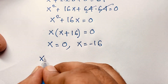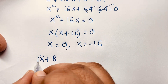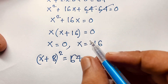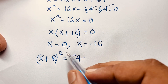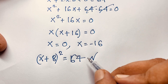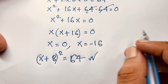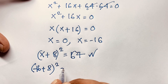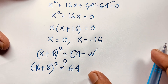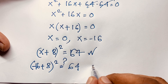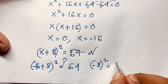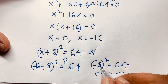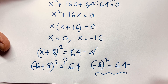Let's verify our answers in the original equation (x + 8)² = 64. First, if x = 0: (0 + 8)² = 8² = 64 ✓. Left hand side equals right hand side. Next, if x = −16: (−16 + 8)² = (−8)² = 64 ✓. This is correct because a negative number raised to an even power is always positive, so (−8)² = 64. Both sides are equal.